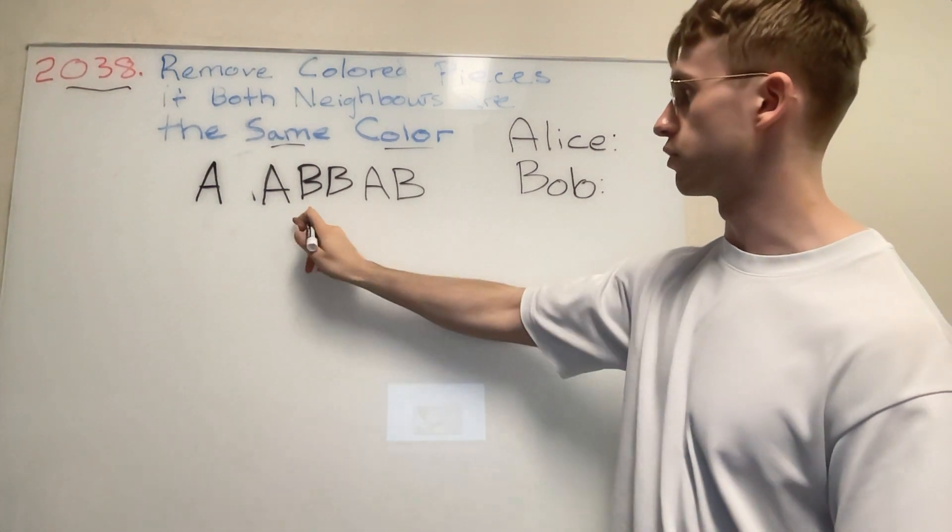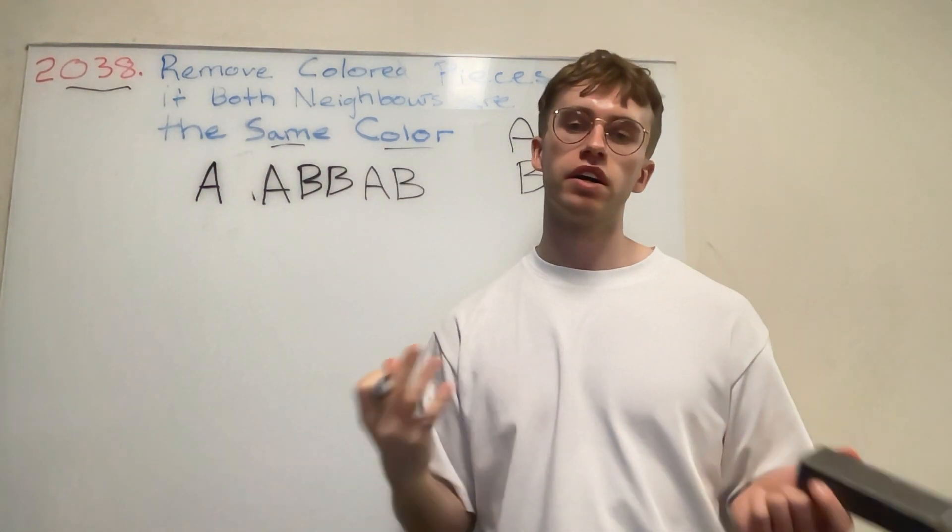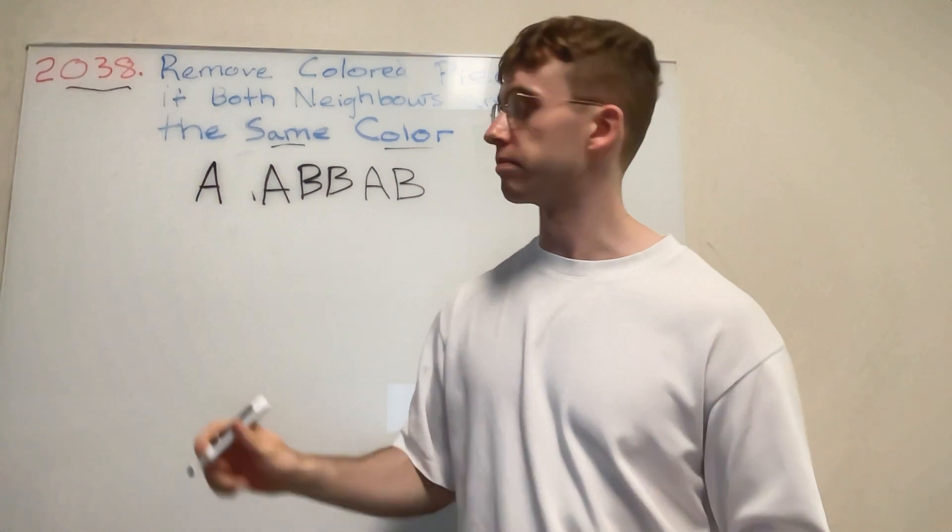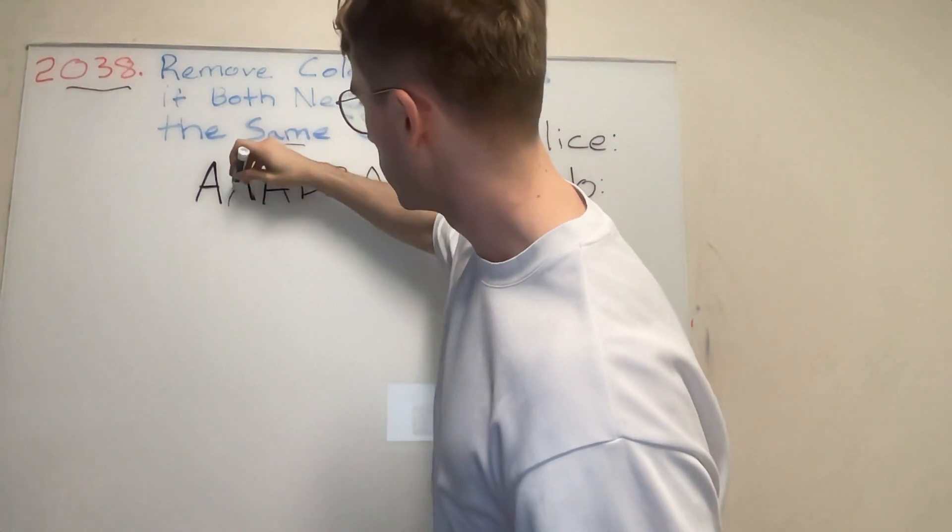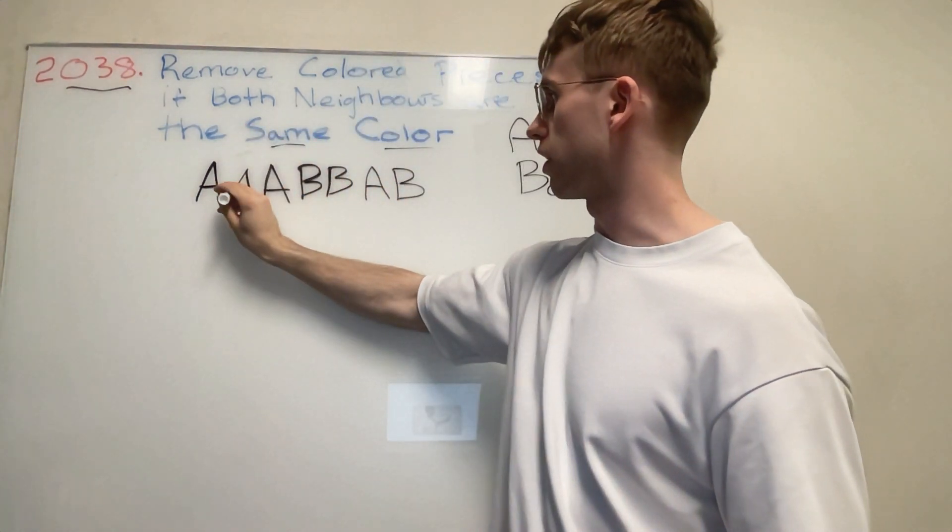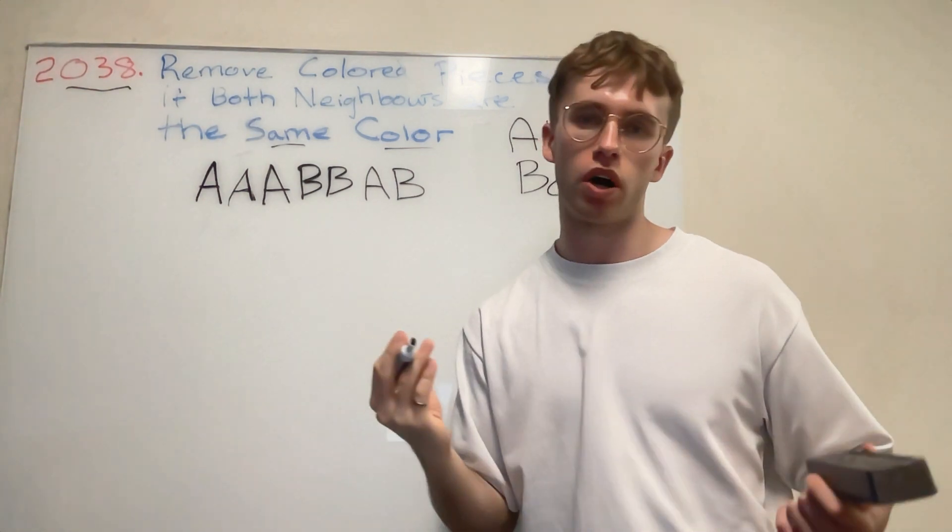Then when it's Bob's turn, there's no three contiguous B's, so now Bob can no longer play. So how do we actually write an algorithm and programmatically solve this problem?